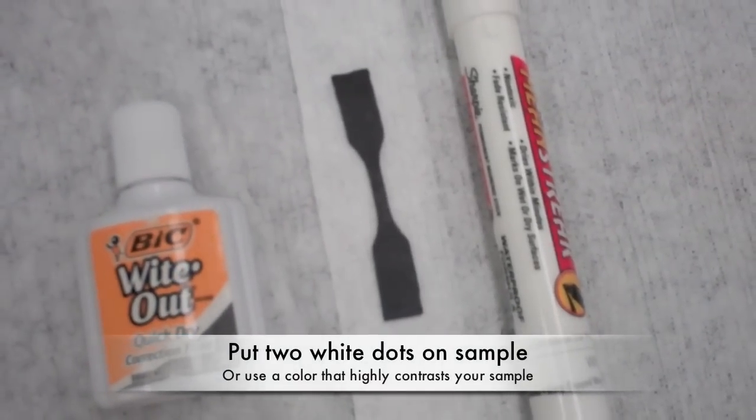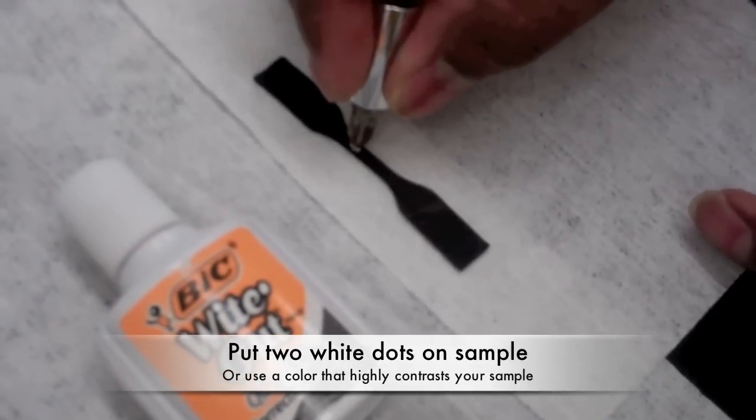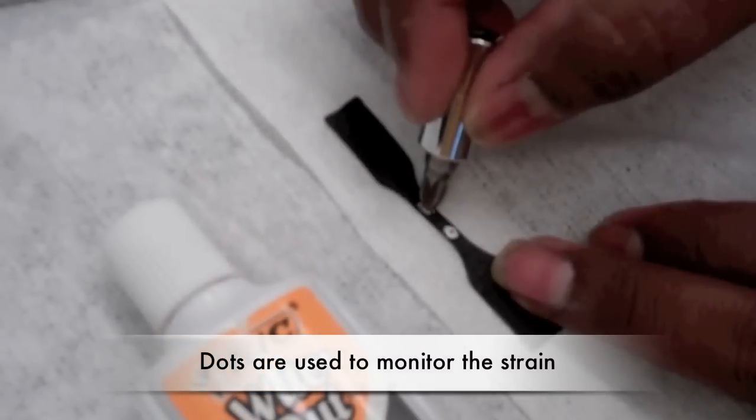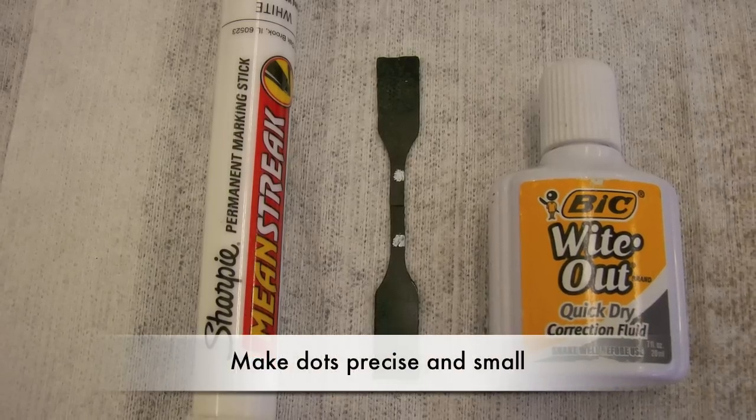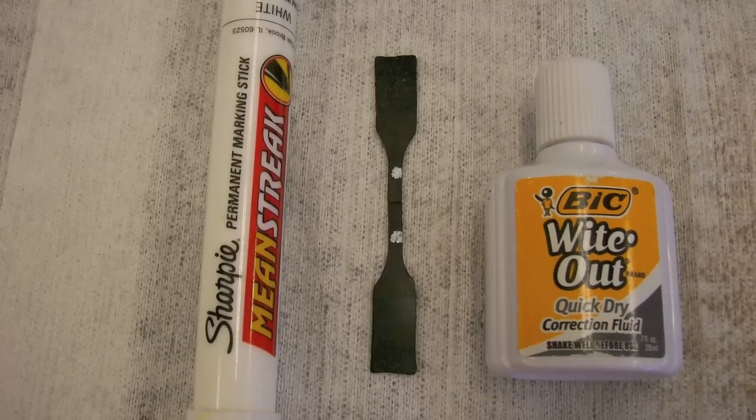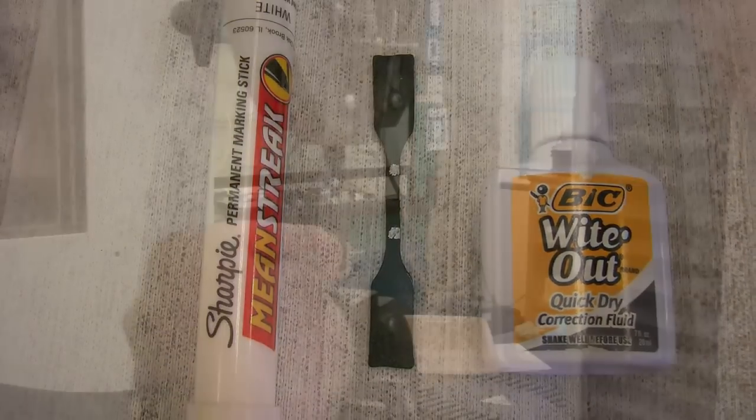Take your sample and put two white dots on the gauge length using a white marker or paint. The distance between these dots will be automatically measured and monitored by the video extensometer. Make sure the dots are very precise and relatively small so the software can easily recognize and monitor them during the experiment.